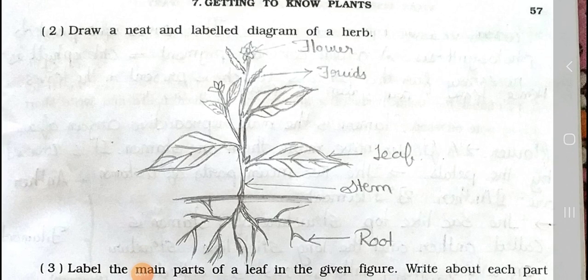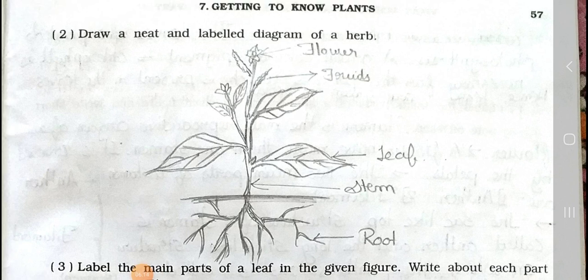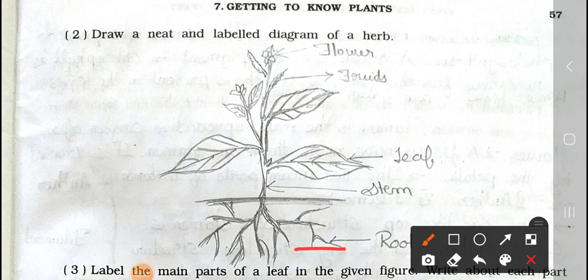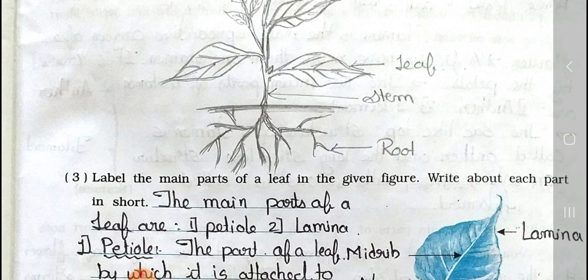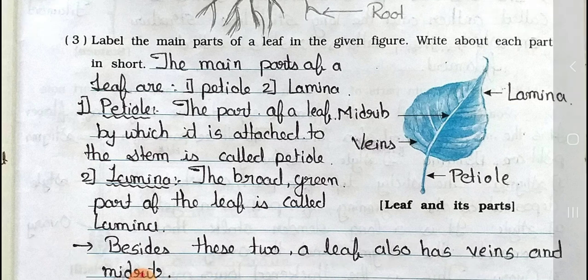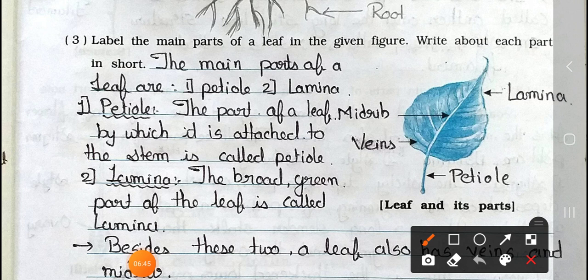Question 2: Draw a neat and labelled diagram of a herb. In the diagram of a herb, see: here it's the root, here it's the soil and upper soil, it's the stem, leaves, then here it's the fruits and here it's the flower. Question 3: Label the main parts of a leaf in the given figure and write about each part in short. Here the leaf is shown: this part is the lamina, this part is the midrib, and these are the veins, and here it's the petiole. The main parts of a leaf are number 1 petiole and number 2 lamina.